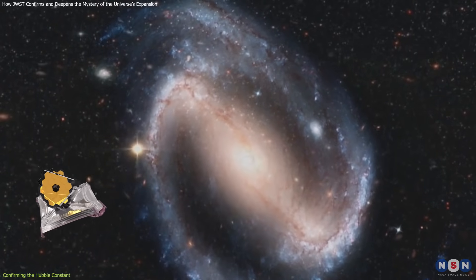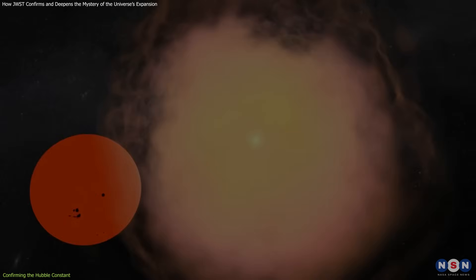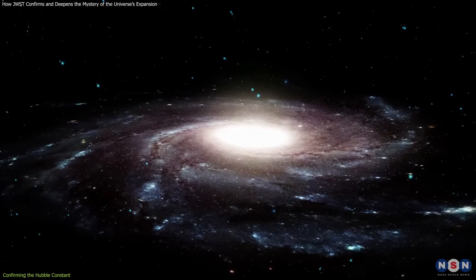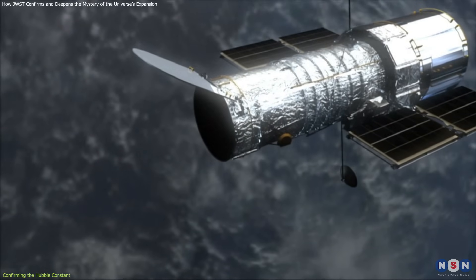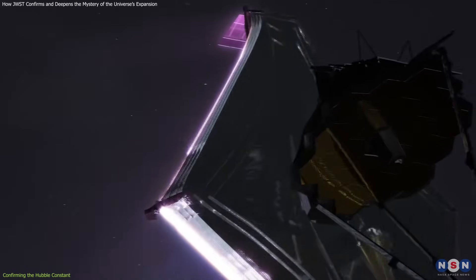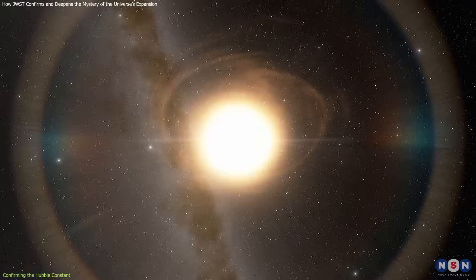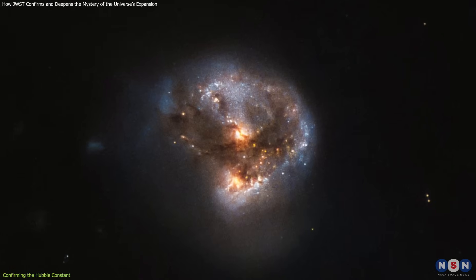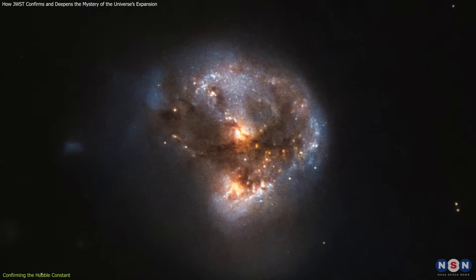Webb can observe Cepheid variables and type Ia supernova in galaxies that are much farther away than those observed by Hubble and other telescopes, and it can also use other types of standard candles, such as red giant stars and masers, which are natural sources of microwave radiation.